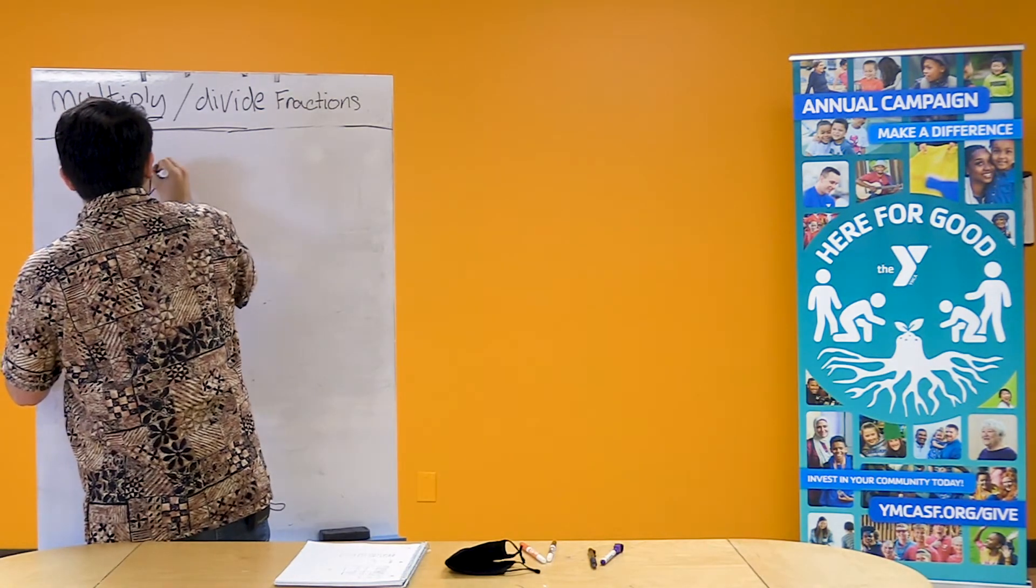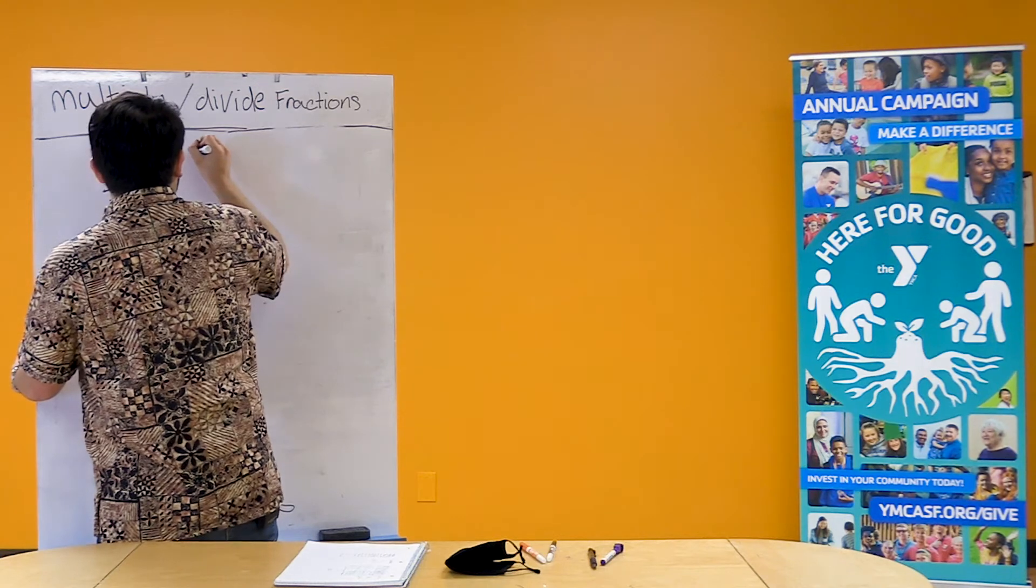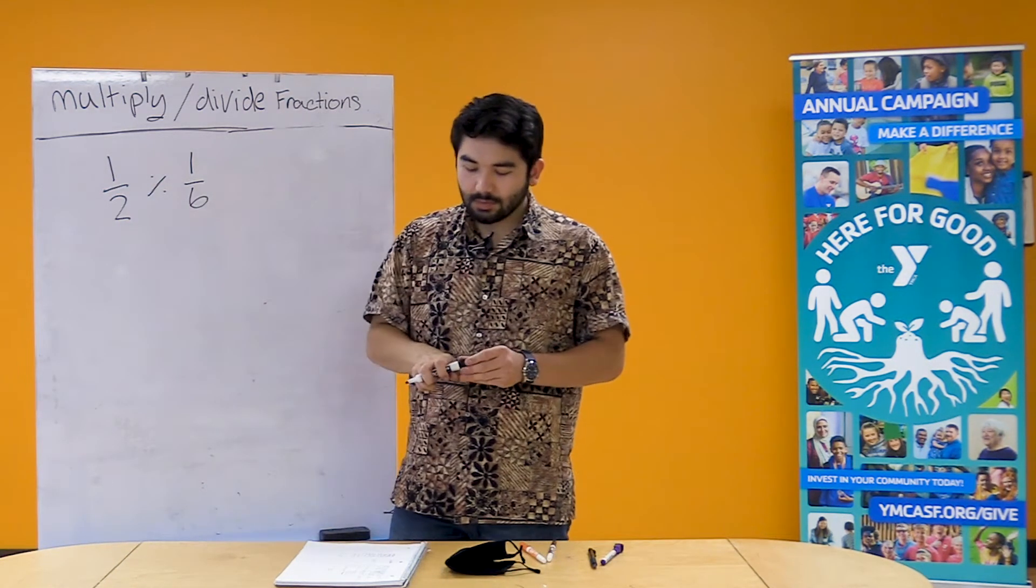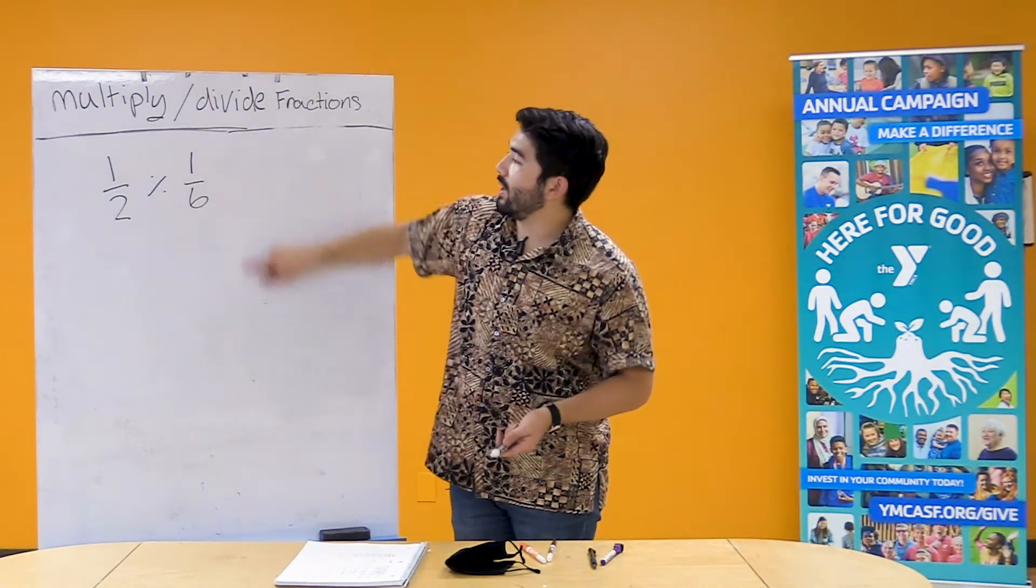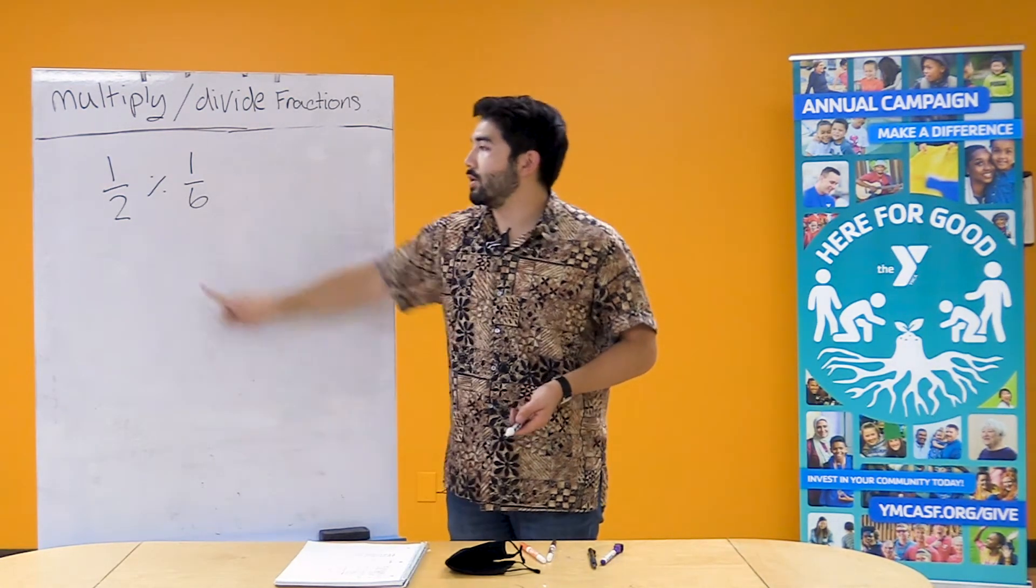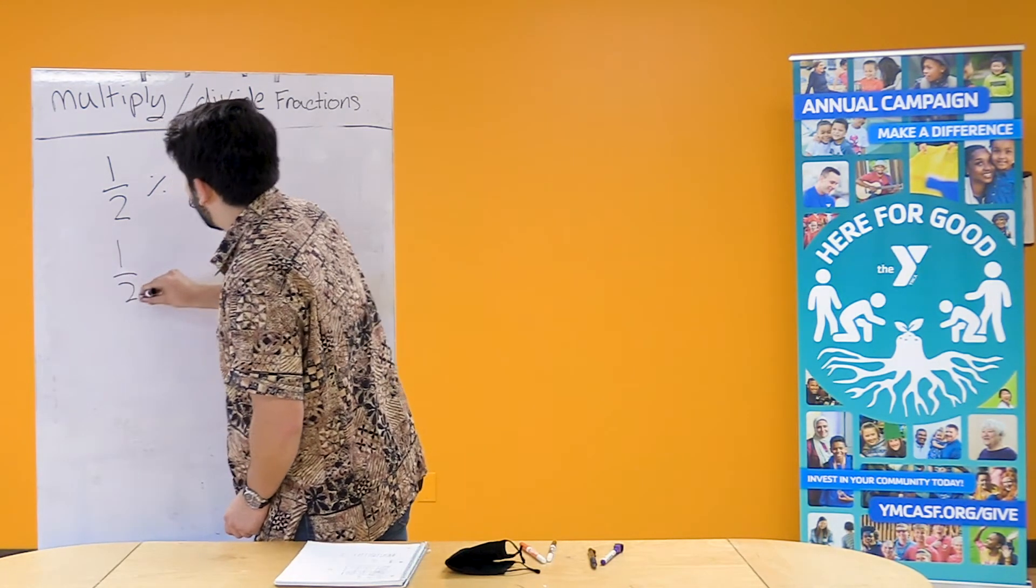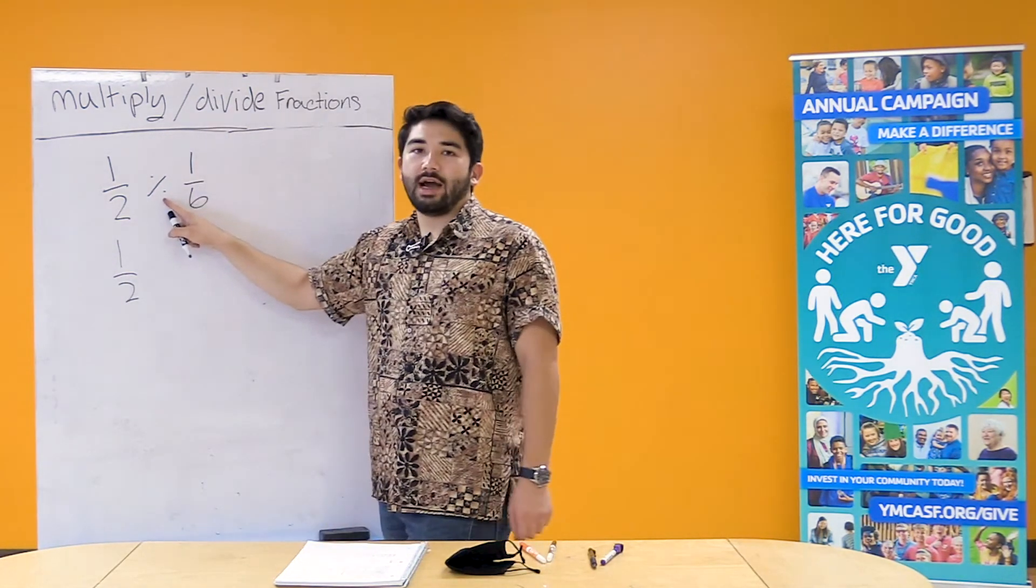1/2 divided by 1/6. Okay. So what we're gonna do here, if you remember from before, we're going to flip the second part and multiply it by the first part. So I'm gonna bring down 1/2 and we're gonna change our divide into a multiply.